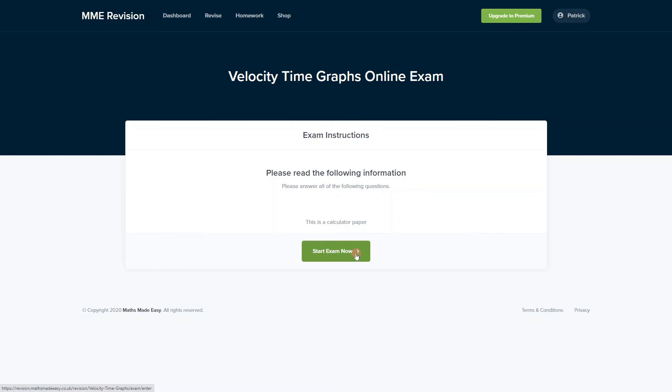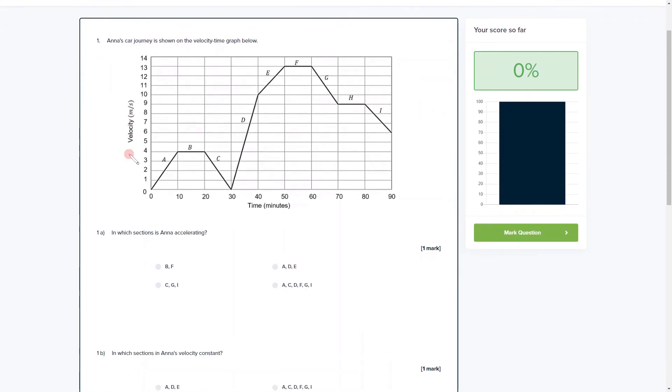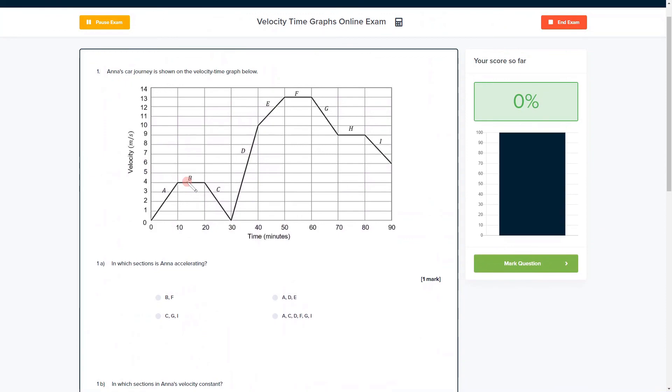If you want to get some practice with some velocity-time graph questions, then why not practice our online exam. You can get there through our revision platform, and there's loads of different questions to have a go at. You get instant feedback on each and every one of them, which will allow you to keep track of the areas that you're weakest at and need to improve on. If you're interested, then click the link below—it will take you straight there.